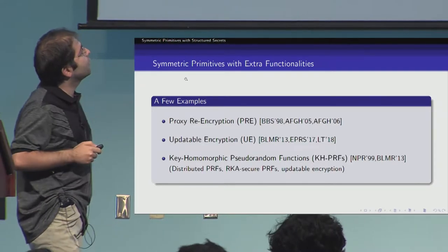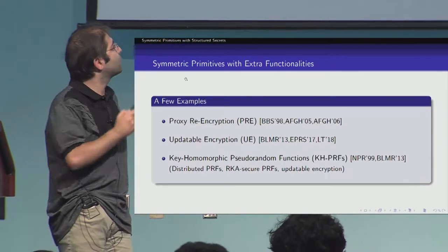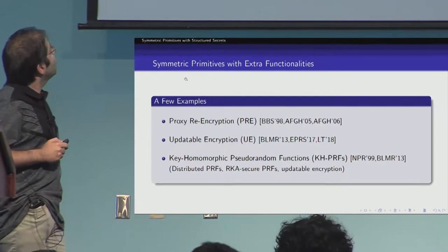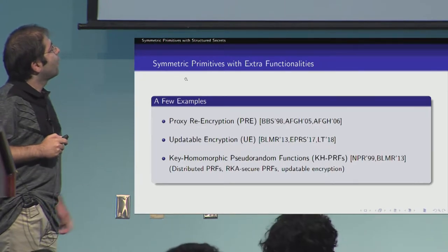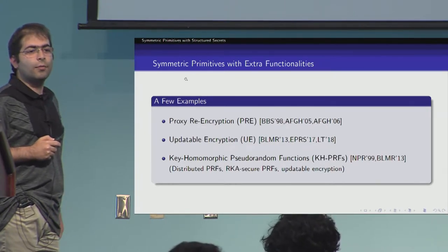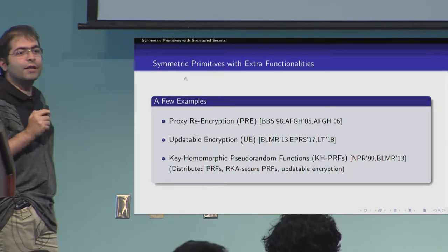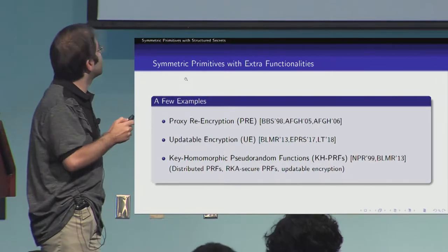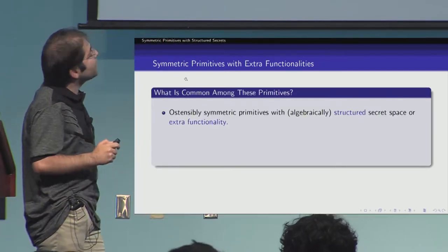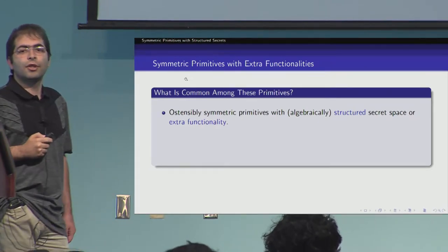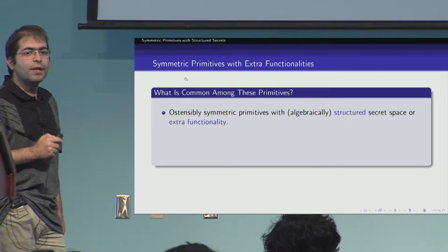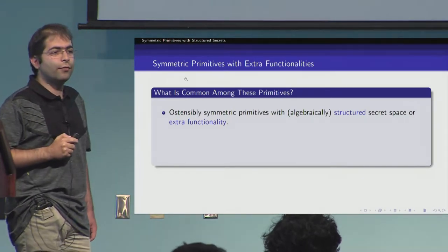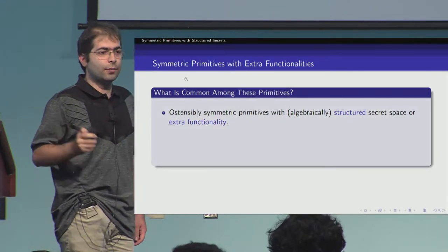This primitive is particularly interesting because it serves as a building block to construct other primitives such as updatable encryption. A natural question is what would bring all these primitives under one umbrella. Although these primitives differ significantly in terms of constructions and proofs, they share common properties. The first is that these are ostensibly symmetric primitives that have a structured secret space or extra functionality. For example, in the case of keyhomomorphic pseudo-random functions, the key space is a group which is algebraically structured.